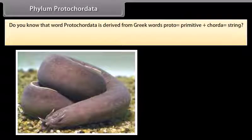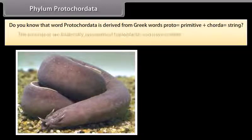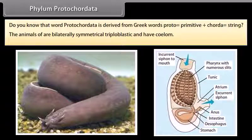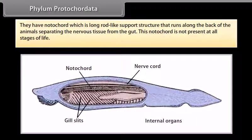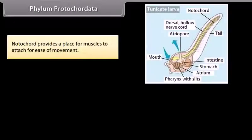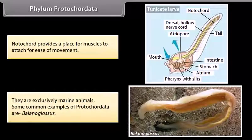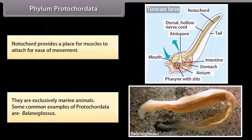Phylum Protochordata. The word protochordata is derived from Greek words: proto, primitive, plus corda, string. The animals are bilaterally symmetrical, triploblastic, and have a coelom. They have a notochord, which is a long rod-like support structure that runs along the back of the animals, separating the nervous tissue from the gut. This notochord is not present at all stages of life. It provides a place for muscles to attach for ease of movement. They are exclusively marine animals. A common example is Balanoglossus.